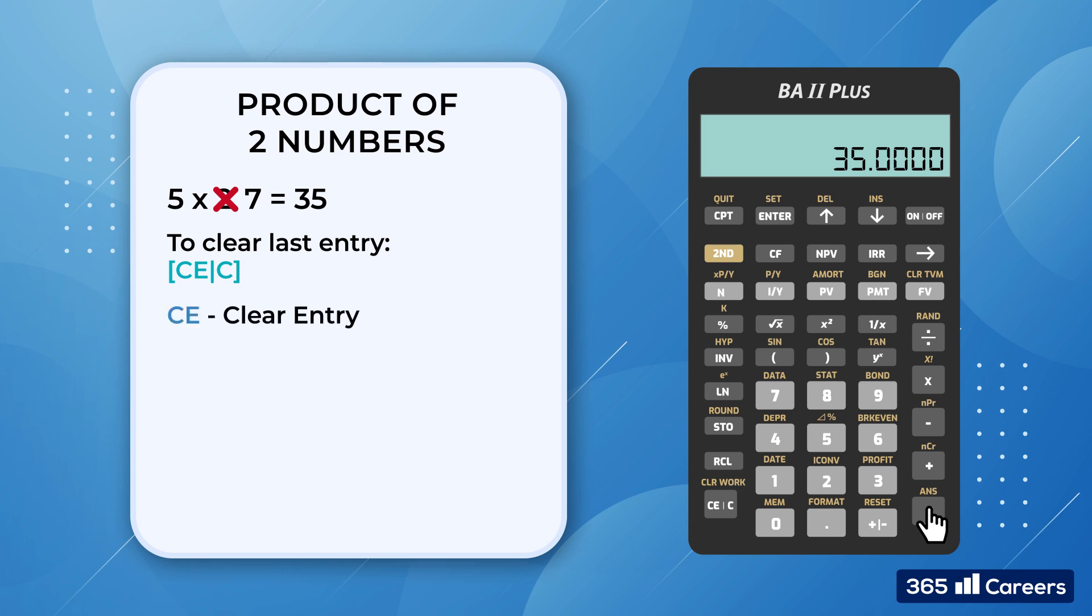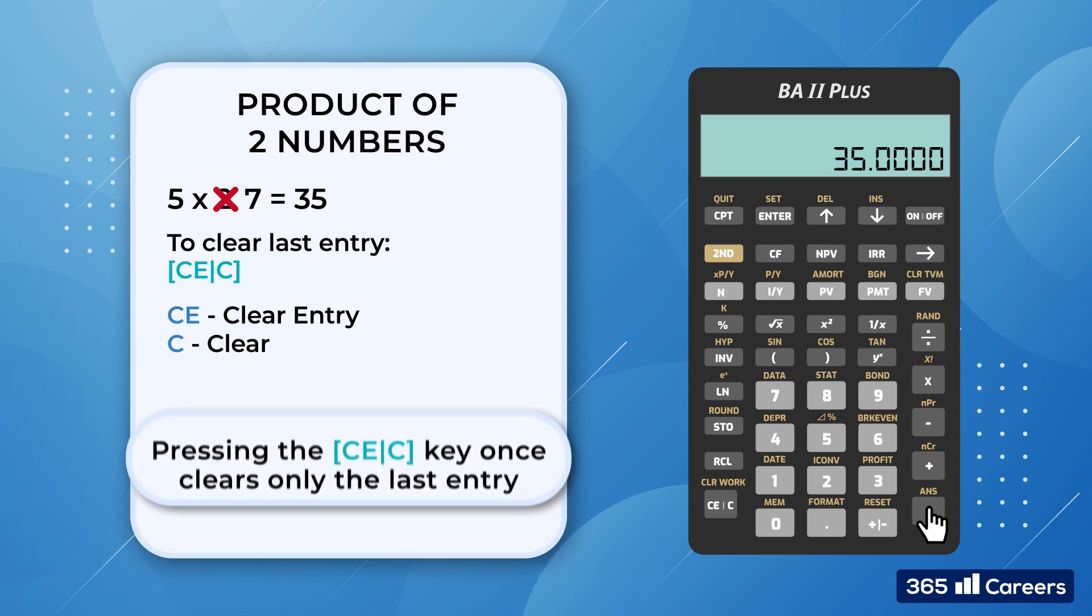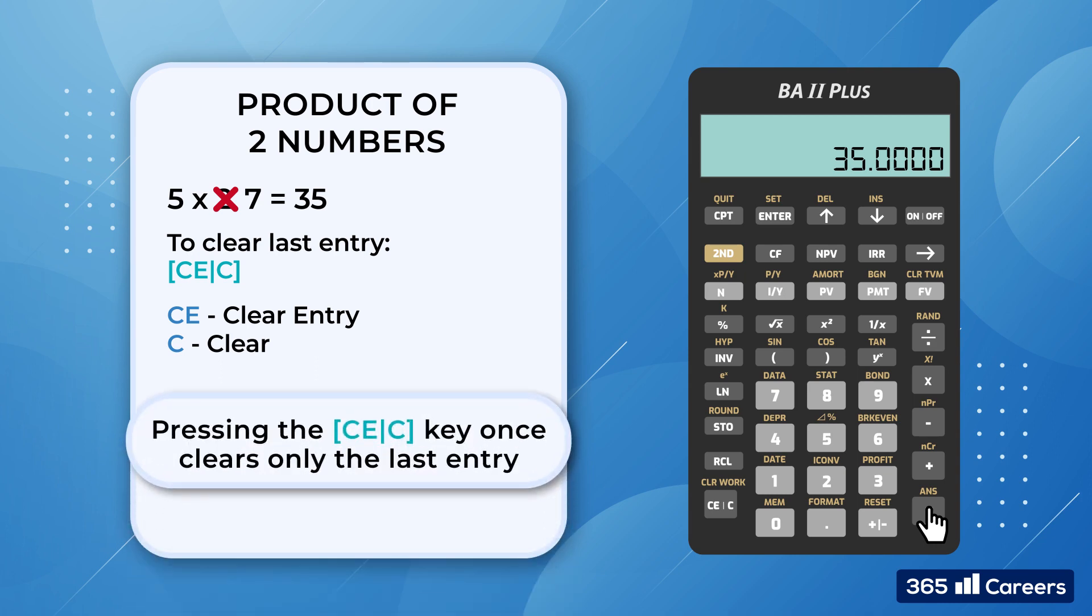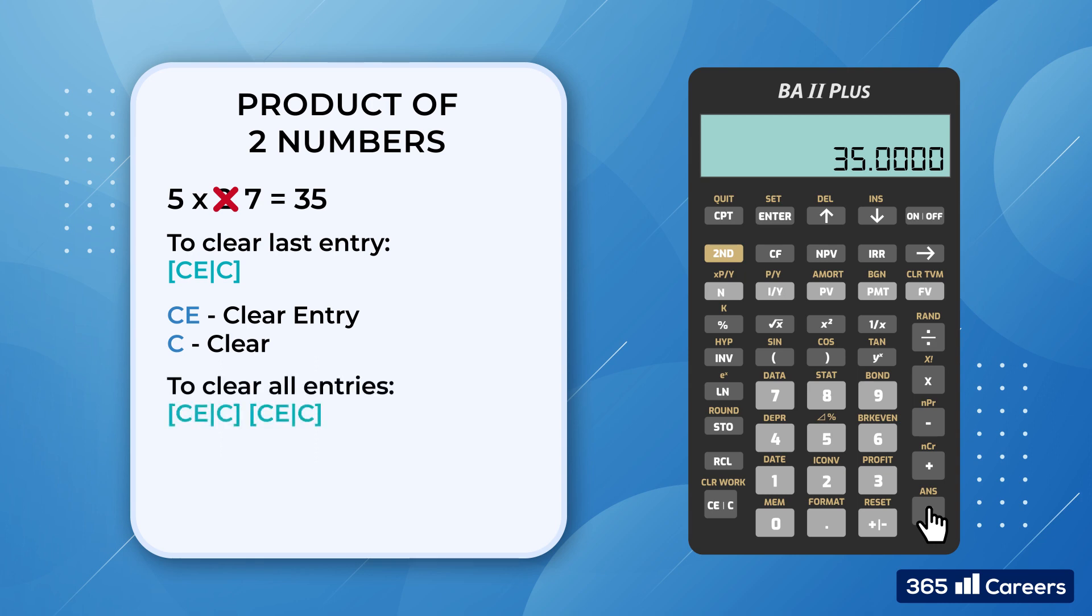CE stands for clear entry, while C is for clear. The important thing you should remember is that when we press the CE/C key only once, it clears only the last entry. This means that the rest of the expression is still stored. If we press it two times, the whole previous calculation process is cleared and we will have to start over.